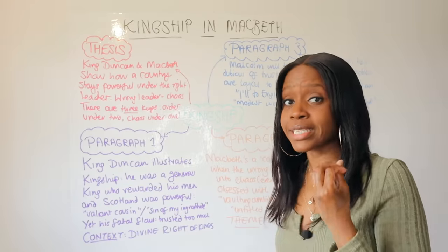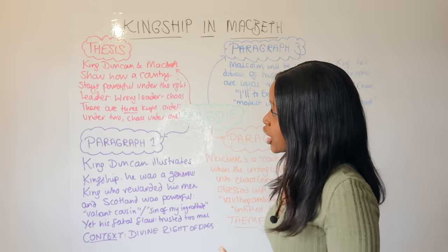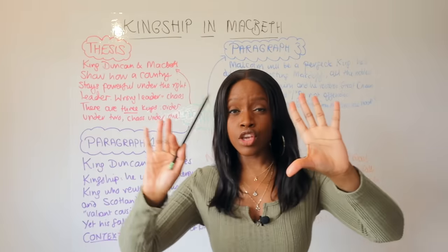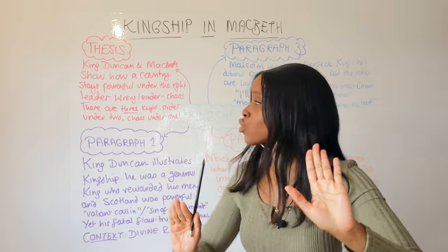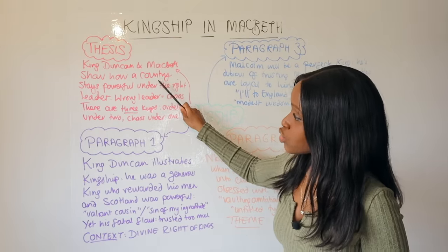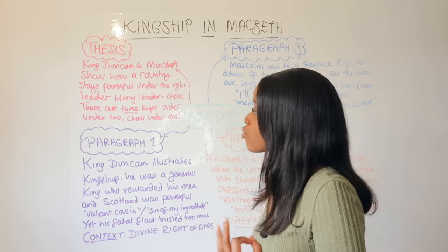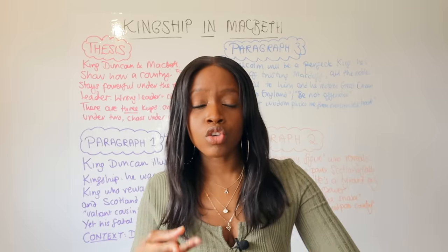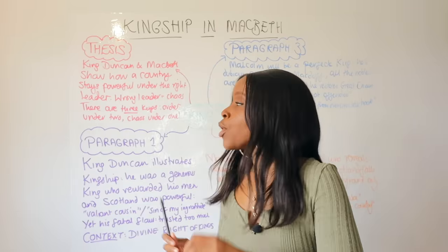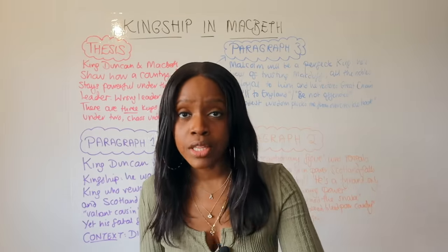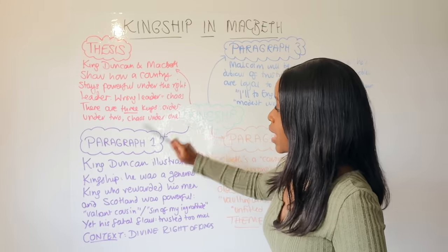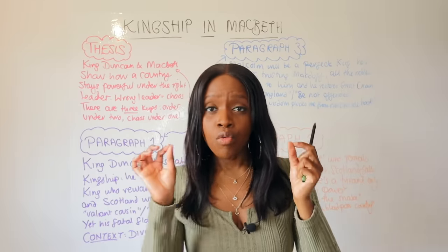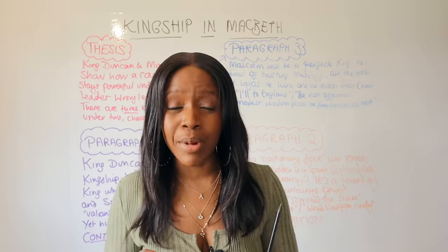Always begin a really strong essay with your thesis statement - what is the message that Shakespeare is trying to impart on this central theme? Shakespeare uses King Duncan, the first king, and Macbeth, who becomes the second king, juxtaposing and contrasting them to illustrate how a country like Scotland stays powerful under the right leader. Under King Duncan, Scotland won all its wars, but under the wrong leader - one not chosen by God through divine right of kings - Scotland descended into chaos and arguably anarchy.